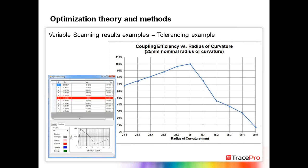Another use of variable scanning is tolerancing. Here's a lens with a nominal 25mm radius of curvature coupled to a detector. If we want to see the effect of changing that radius due to manufacturing tolerances — how coupling efficiency changes — we can see as the radius increases, efficiency falls off very rapidly, not quite as much if the radius decreases. We can look at the effect of manufacturing tolerances using this variable scanning method.